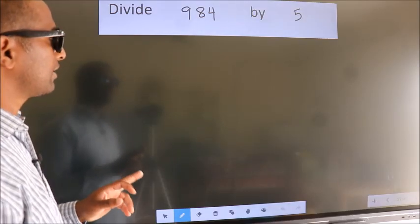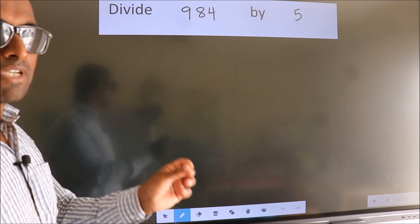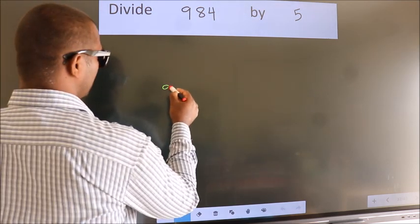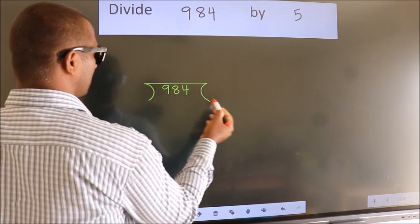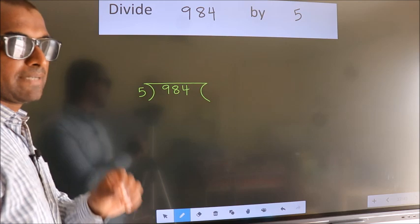Divide 984 by 5. To do this division, we should frame it in this way. 984 here, 5 here. This is your step 1.